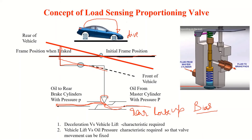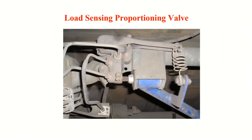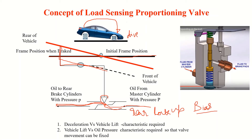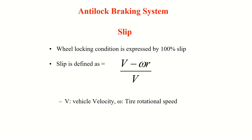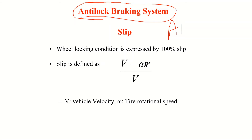However, these proportioning valves may not respond accurately enough for all situations, and there are still chances of lock-up. To address this, nowadays anti-lock braking systems (ABS) are used. To understand ABS, first understand the idea is to keep the pressure appropriately controlled. We also need to define slip.